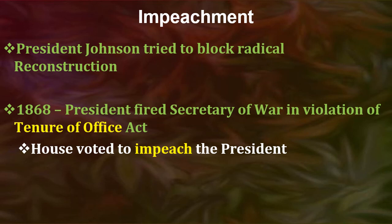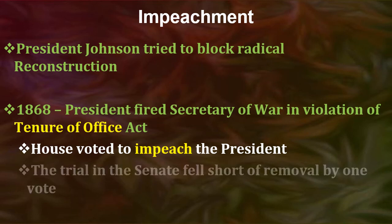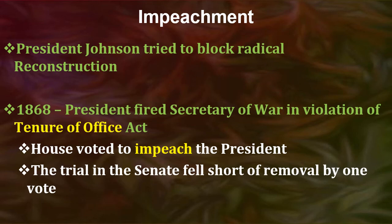It's important to note that impeachment is not the same as removal — there are two different processes. In our constitutional system, impeachment is done in the House of Representatives, and they voted to impeach the president. The trial and potential removal occurs in the Senate. The Senate trial was actually one vote short of getting Johnson out of office. As they say, one vote doesn't matter — well, it certainly mattered in Johnson's case. But he clearly got the message: from this point on there was not much he could do because Congress had all of the power and could certainly stop him if they wanted to.